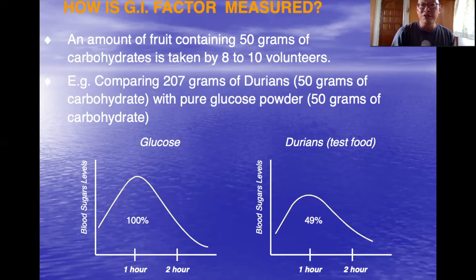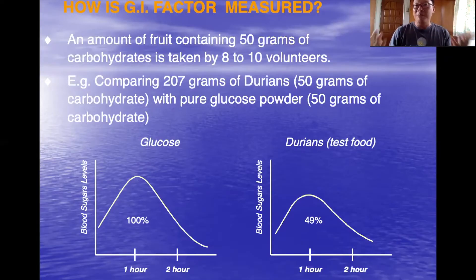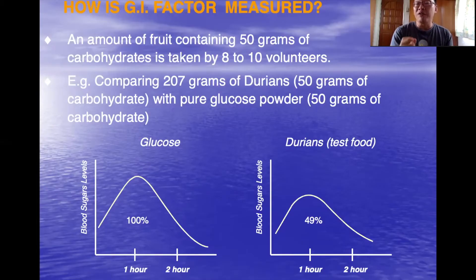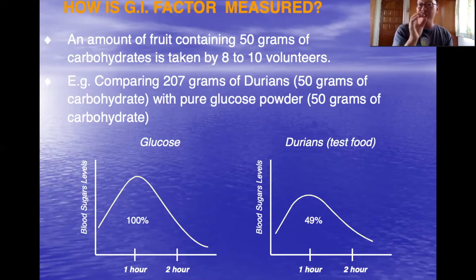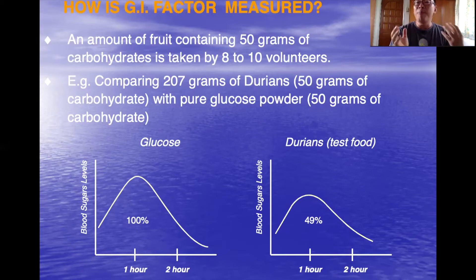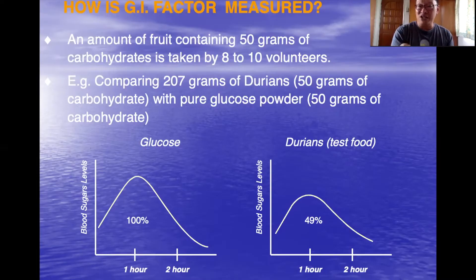The area under the curve is the baseline. Then the next day, the same 10 volunteers come back for 207 grams of durian, which is the equivalent of 50 grams of carbohydrates. Their blood sugar response is measured for the next two hours, and the area under the curve is compared to glucose as the baseline. In this study, durian had a GI index of 49.